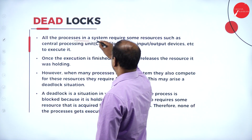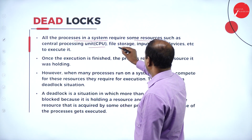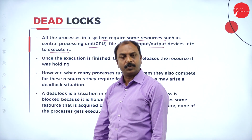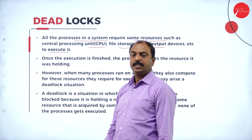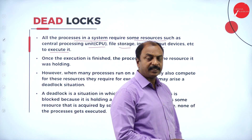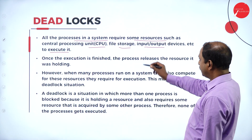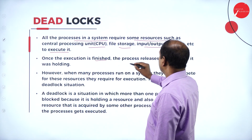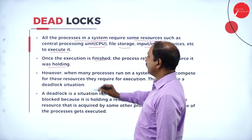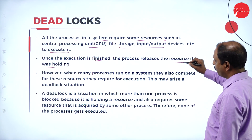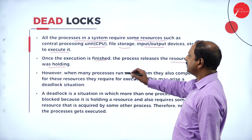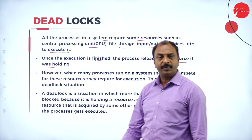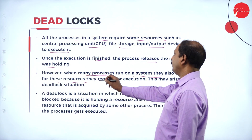All the processes in a system require some resources such as CPU, file storage, input-output devices, etc. to execute. A process is a program in execution. In order to execute a process, it has to share the CPU as well as hardware and other software resources. Once the execution is finished, the process releases the resources it was holding — such as input device, output device, or memory devices.